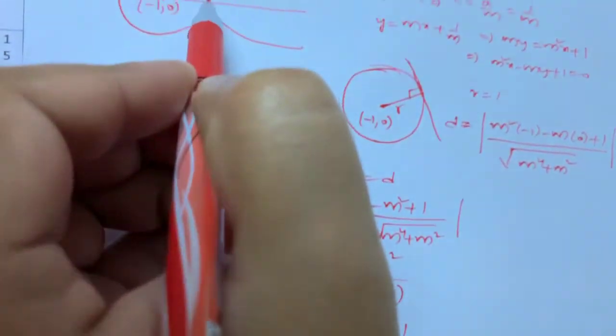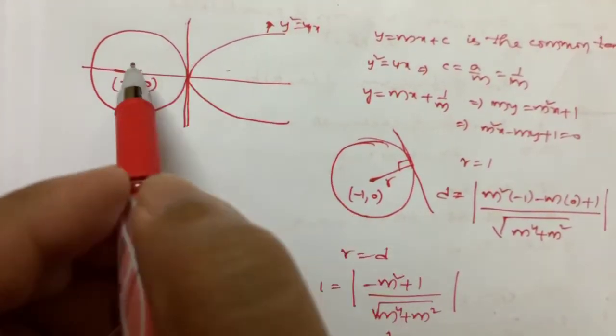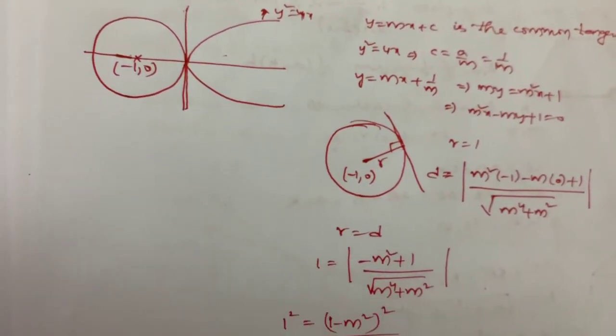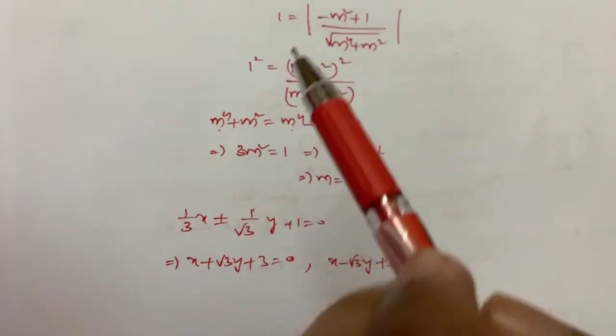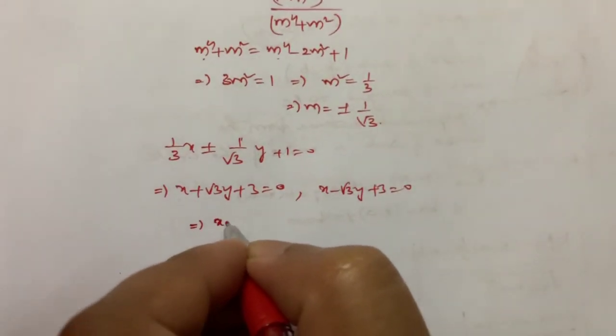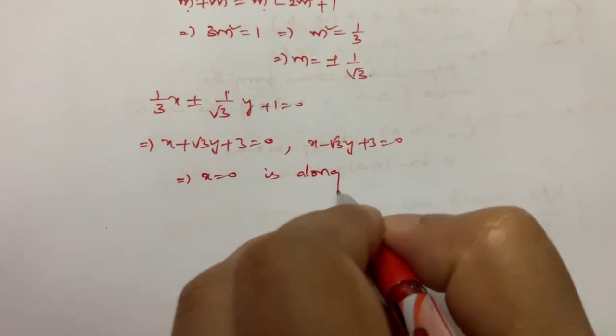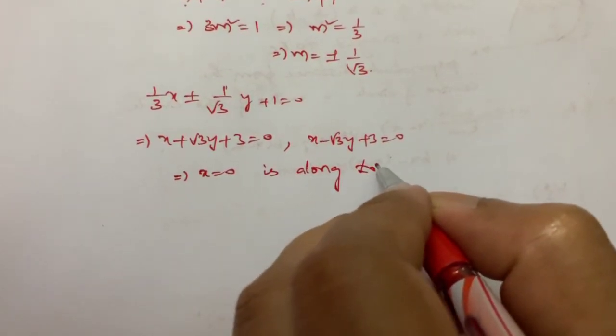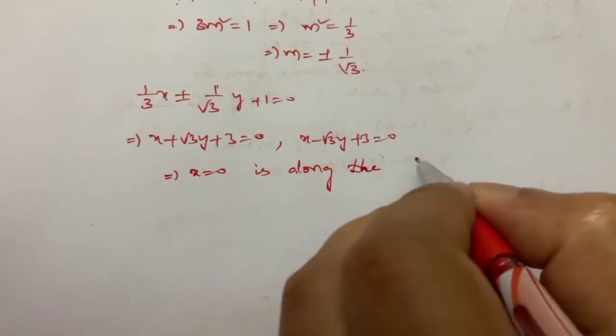Along with that, from the graph if you see that, this line x = 0 is also a tangent to both of them. This is not coming here because the highest power is getting cancelled. That is why we are unable to get the third tangent. So there is one more tangent: x = 0 is also tangent to both the curves along the tangent.